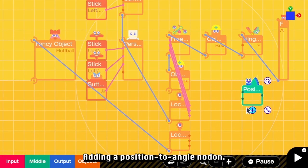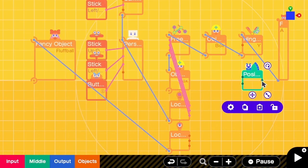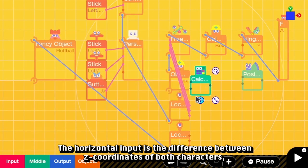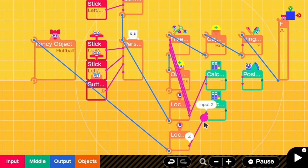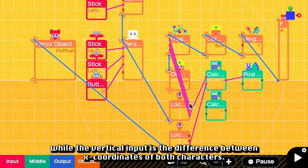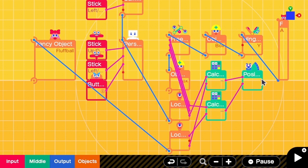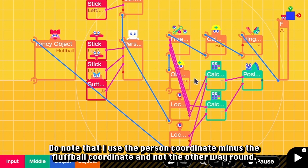Adding a position to anchor Nodon. The horizontal input is the difference between Z coordinates of both characters.